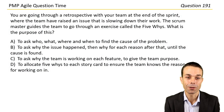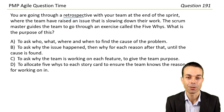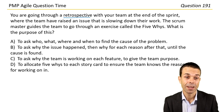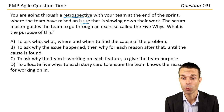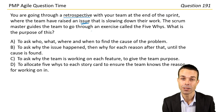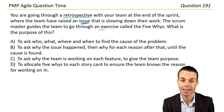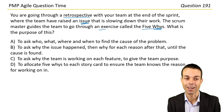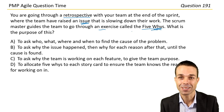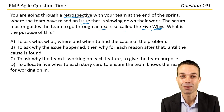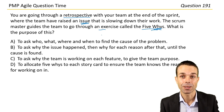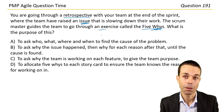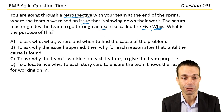You are going through a retrospective with your team at the end of the sprint, where the team have raised an issue that is slowing down their work. The Scrum Master guides the team through an exercise called the Five Whys. What is the purpose of this?